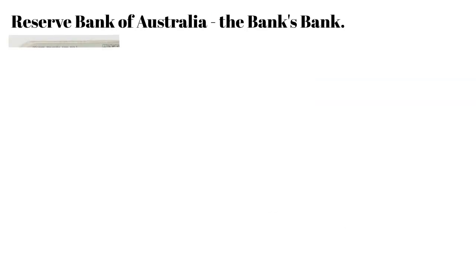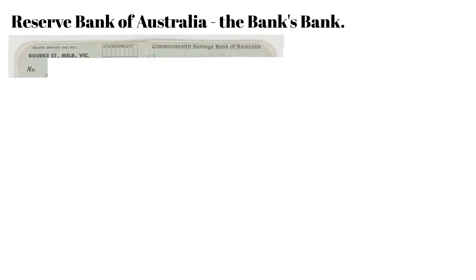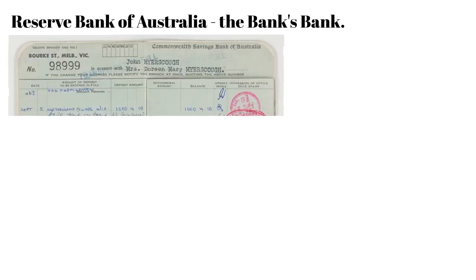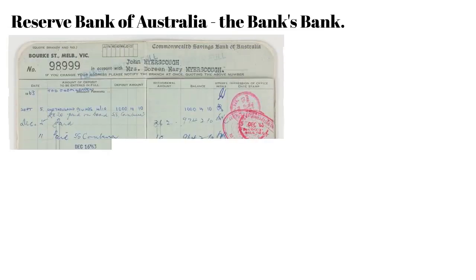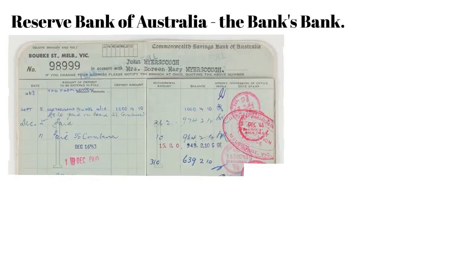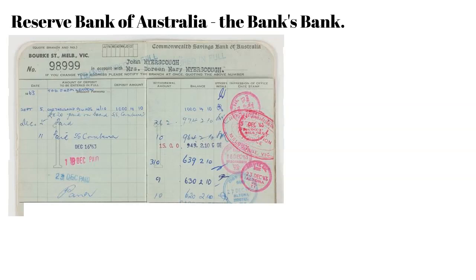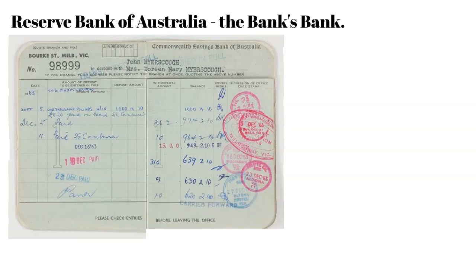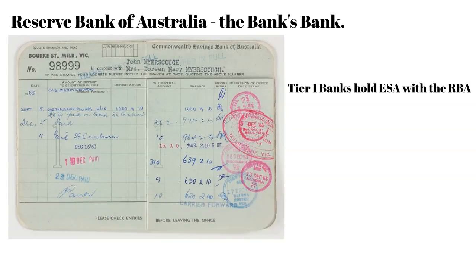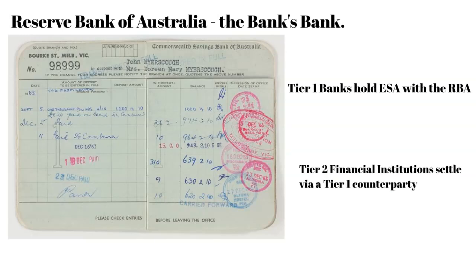Every Australian Tier 1 bank holds an exchange settlement account with the Reserve Bank of Australia. Tier 2 financial institutions have commercial arrangements with Tier 1 banks to perform interbank settlements on their behalf.